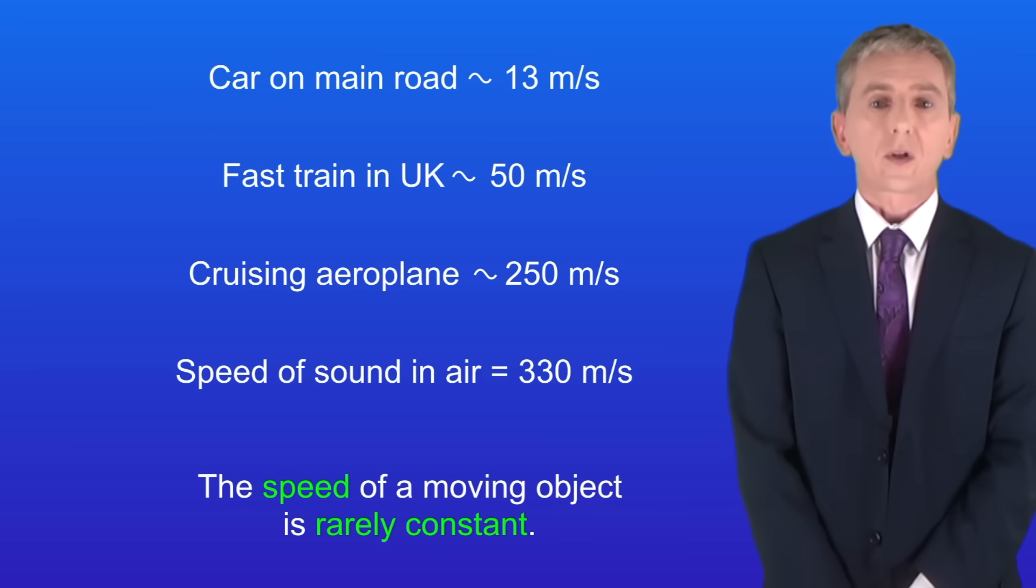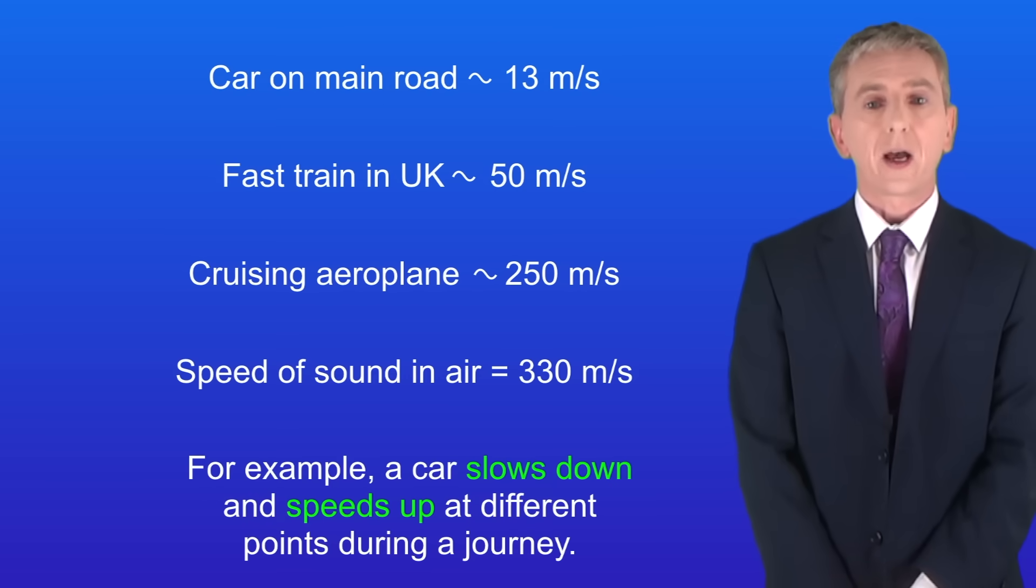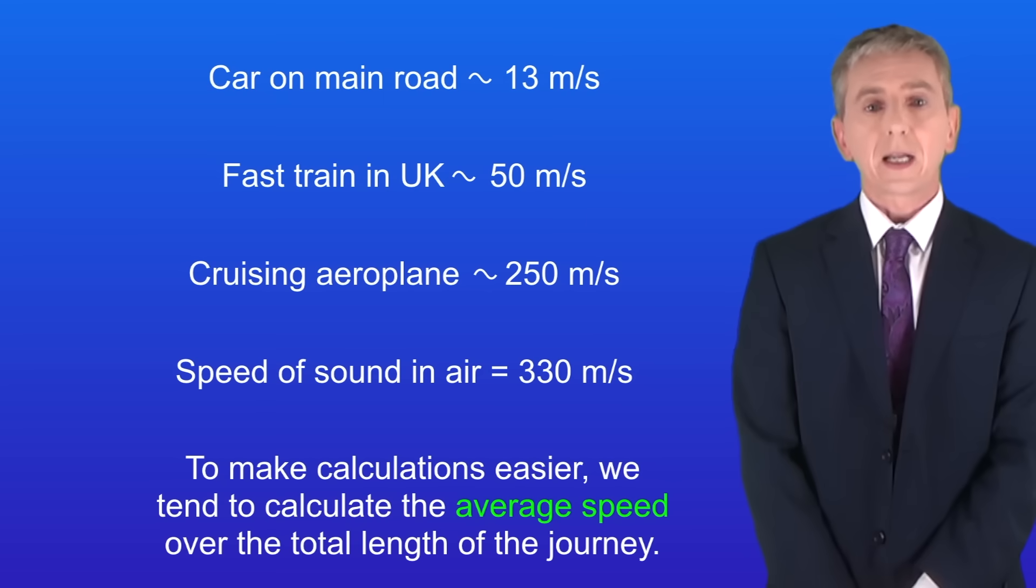It's really important to understand that the speed of a moving object is rarely constant. For example, a car slows down and speeds up at different points during a journey. But to make calculations easier we tend to calculate the average speed over the total length of the journey.